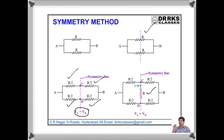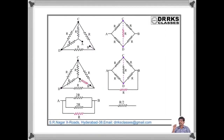Let us find the effective resistance between A and B in this circuit. The points C and D are at the same potential because P by Q equals R by S, so the potential at C equals the potential at D. There is no current flowing through this resistor, so we can remove it. Then the two R's above are in series — that is 2R — and two R's below also 2R. The effective resistance between A and B is R.